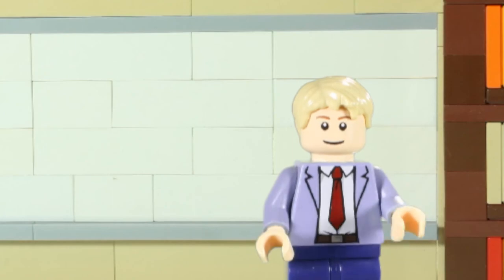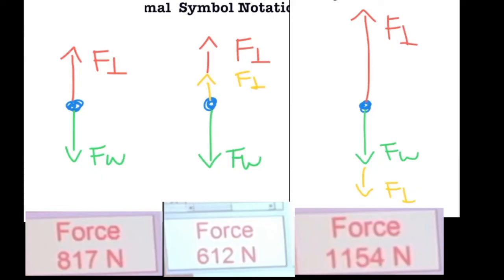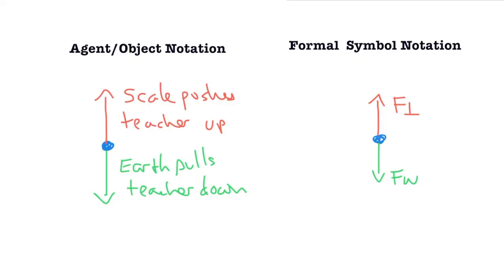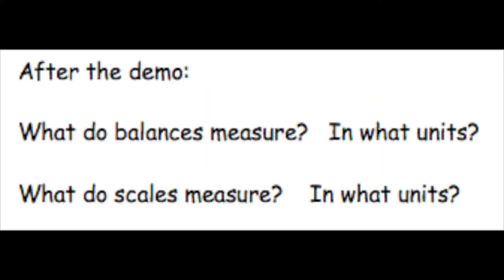Bathroom scales always report normal force. The number on the scale is telling you how hard the scale is pushing up on you. If we stand still on the scale, the reading on the scale is still just normal force, but it's equal to our weight, which we can say based on the free body diagram.